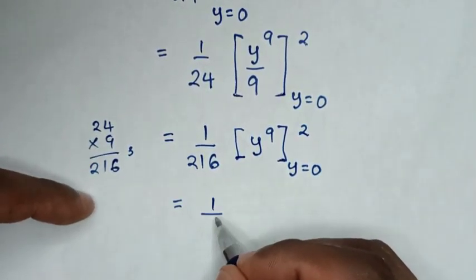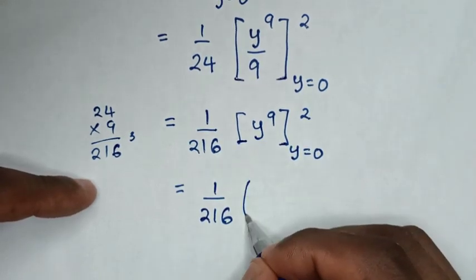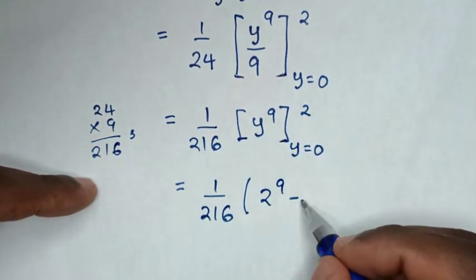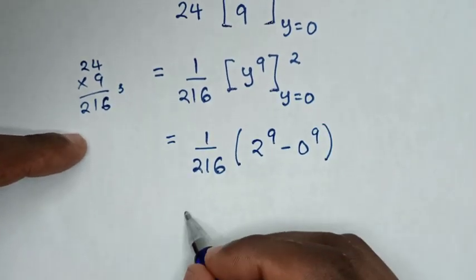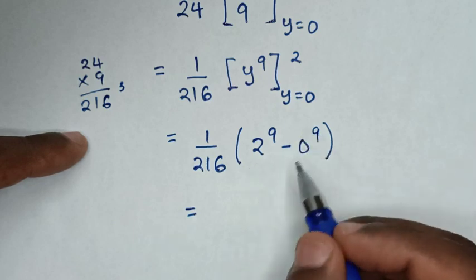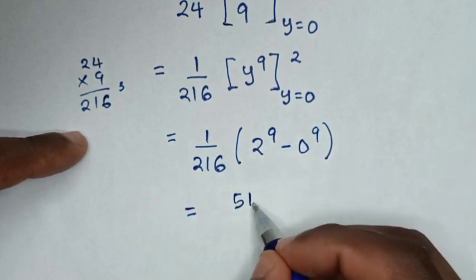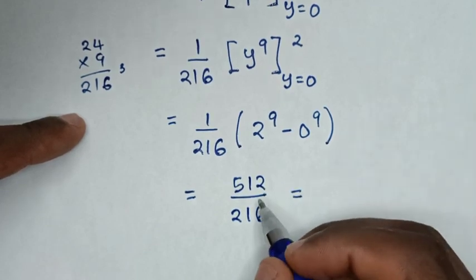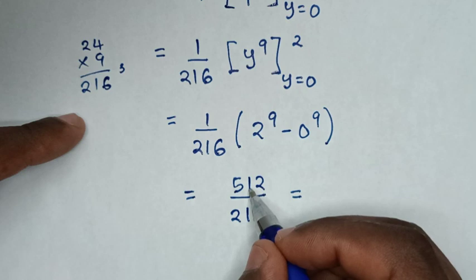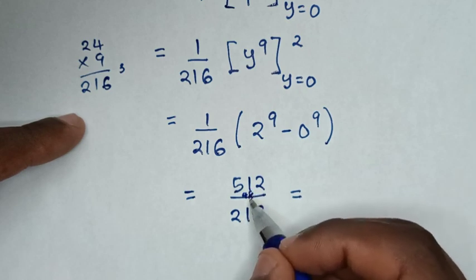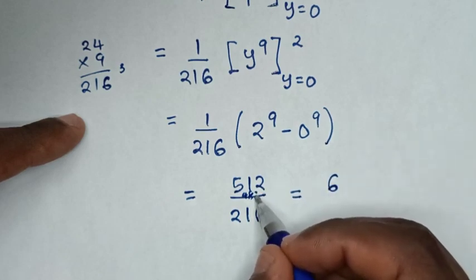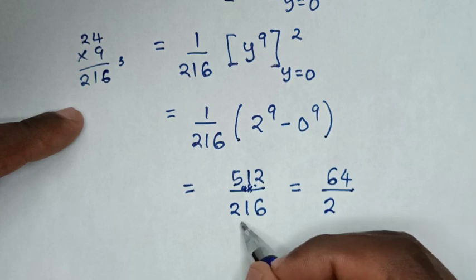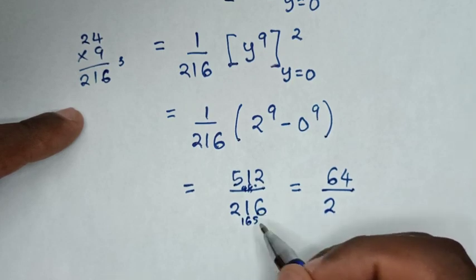Then it will be equal to 1/216, substituting the limits: 2⁹ minus 0⁹. Since 0⁹ is 0 and 2⁹ is 512, it will be 512 over 216. To simplify: dividing both by 8, 512 ÷ 8 = 64, and 216 ÷ 8 = 27.